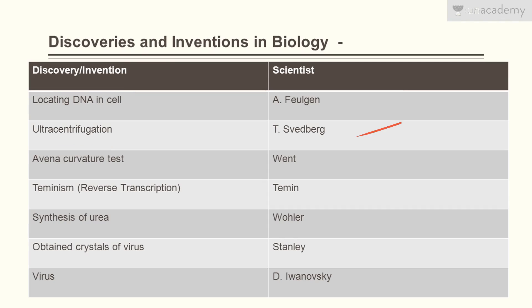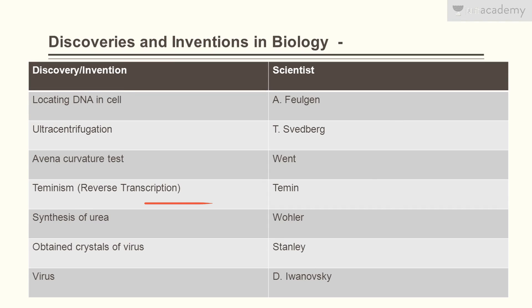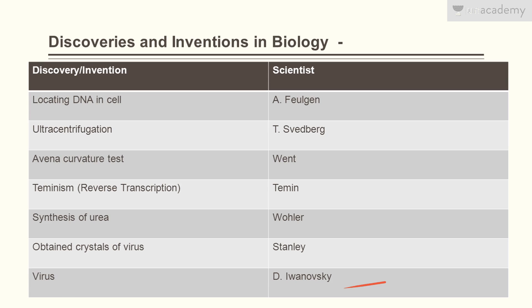The Avena curvature test was discovered by Went. Taminism — that is reverse transcription — was discovered by Temin. Synthesis of urea was invented by Wöhler. Obtaining crystals of a virus was first done by Stanley. Virus was discovered by D. Ivanovski. I hope you liked the lesson — this course ends here, thank you guys for watching.